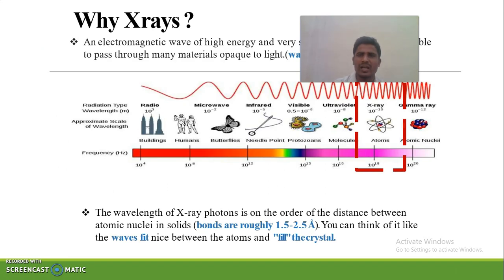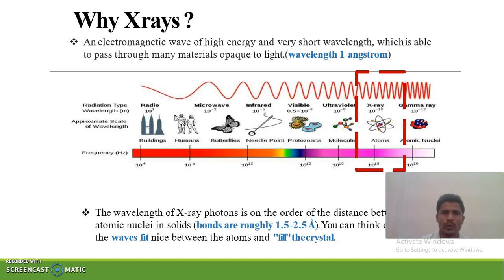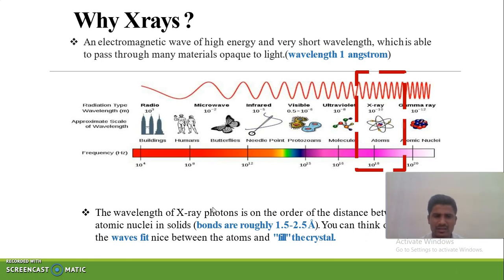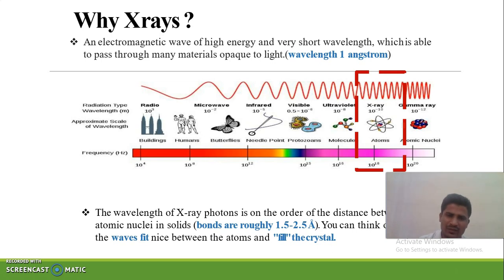Why do we study with X-rays? X-rays have a very short wavelength, nearly about 1 Angstrom. As we can see in the figure, the range is 10 to the power of -10 meters. The wavelength of X-ray photons is about 1.5 to 2.5 Angstroms — comparable to distances between nuclei in crystals, which have a small unit cell. When X-rays are passed through this unit cell or crystals, we can determine the distance between atoms.